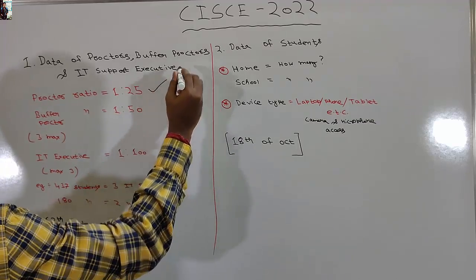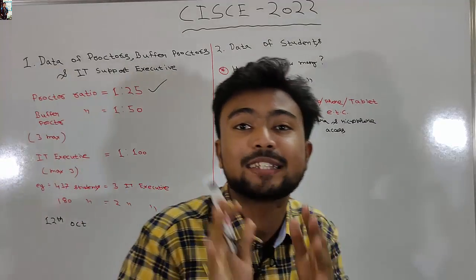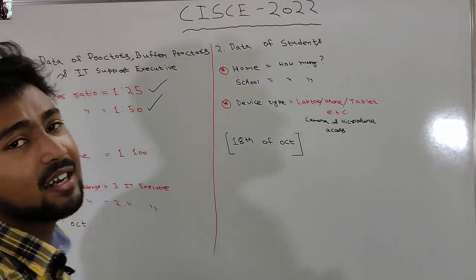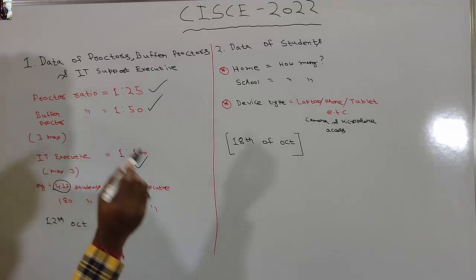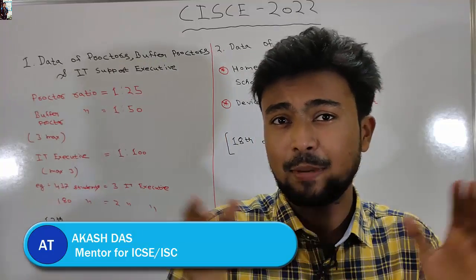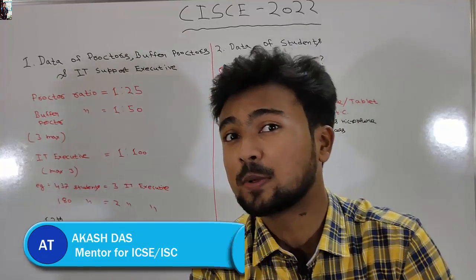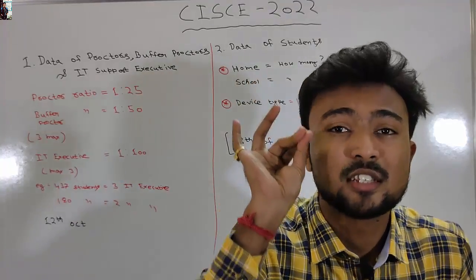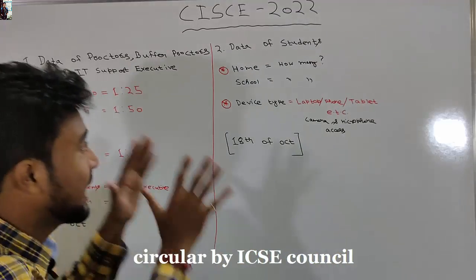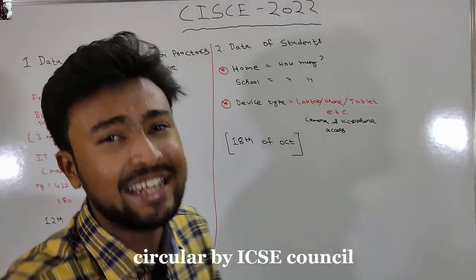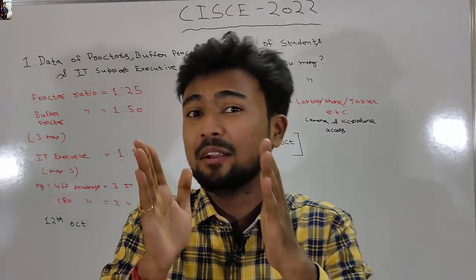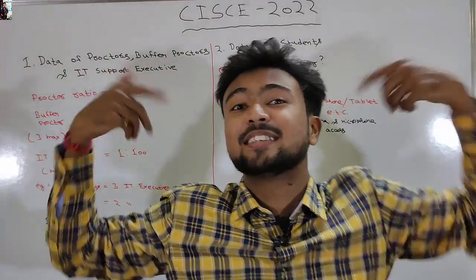One proctor for 25 students — that is the proctor ratio. For 50 students, one buffer proctor. Hello everyone, my name is Akash and welcome back to Akash Talks. Many students have been asking about the circular sent to each and every school by the CIC council — what does it say about proctors, buffer proctors, IT support executives, and data of students?